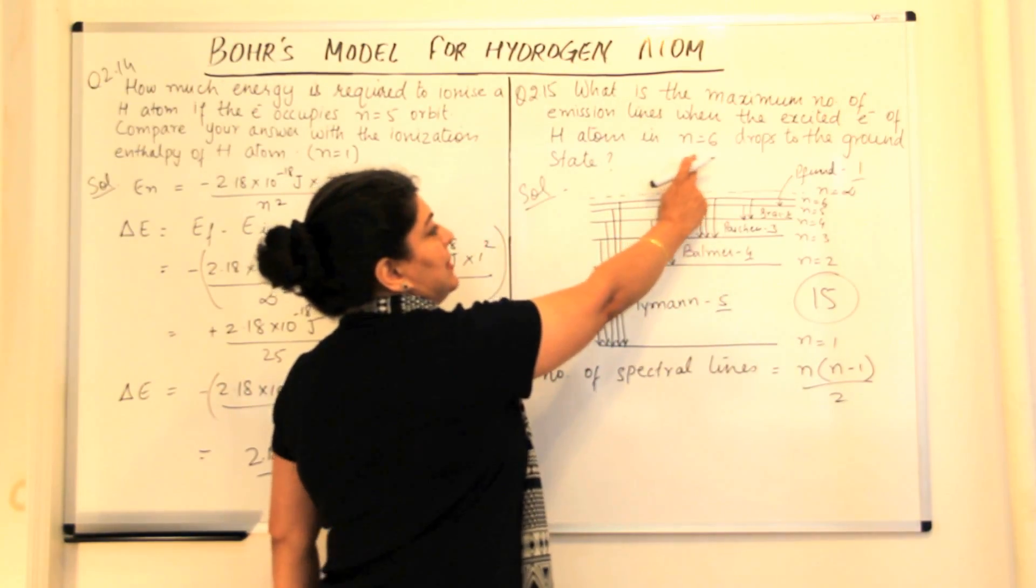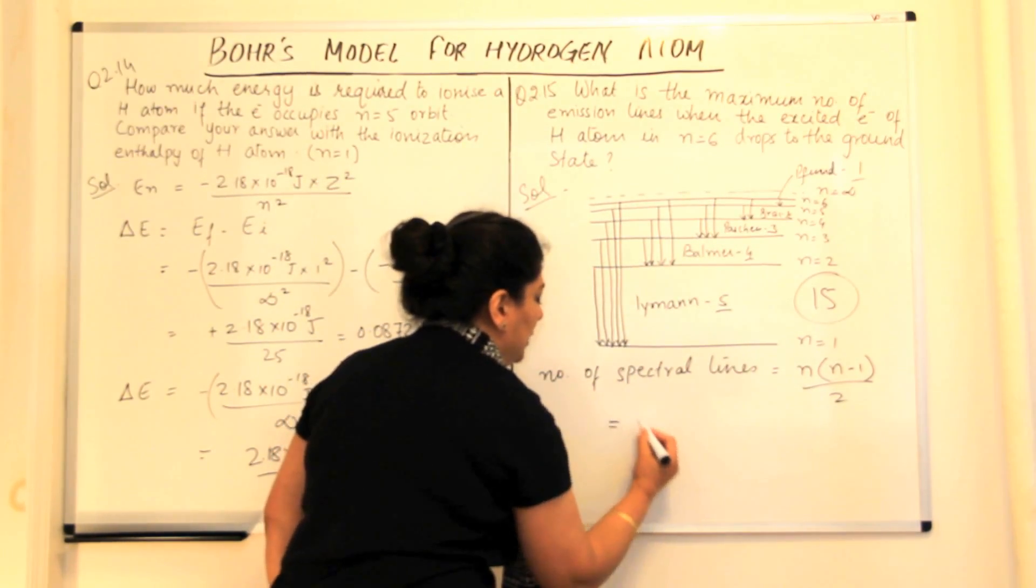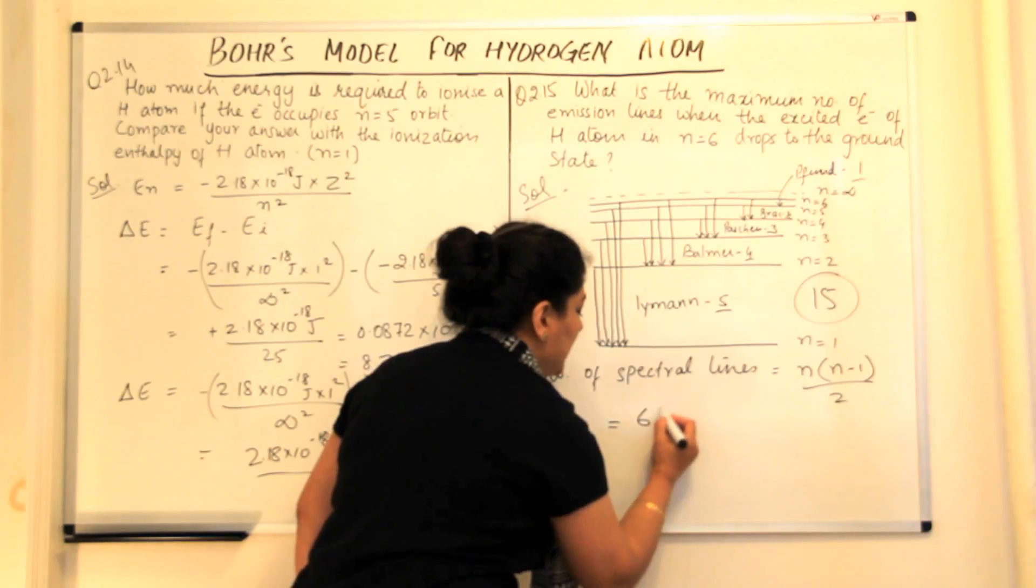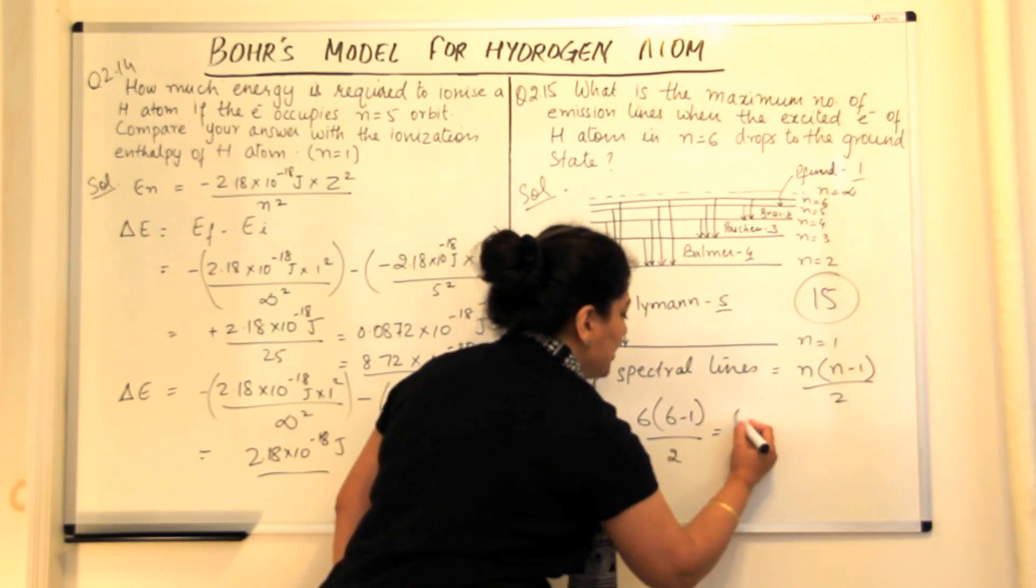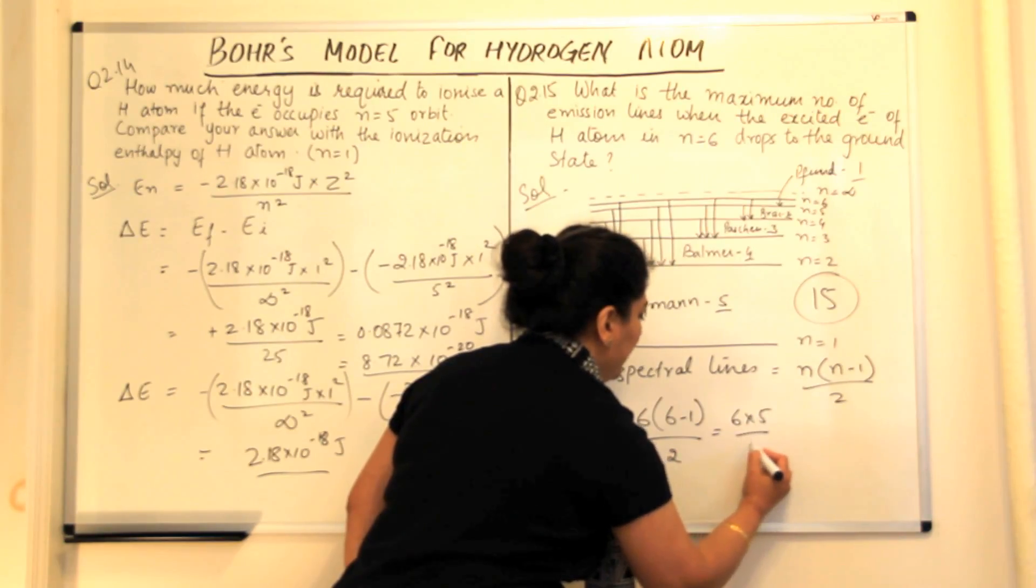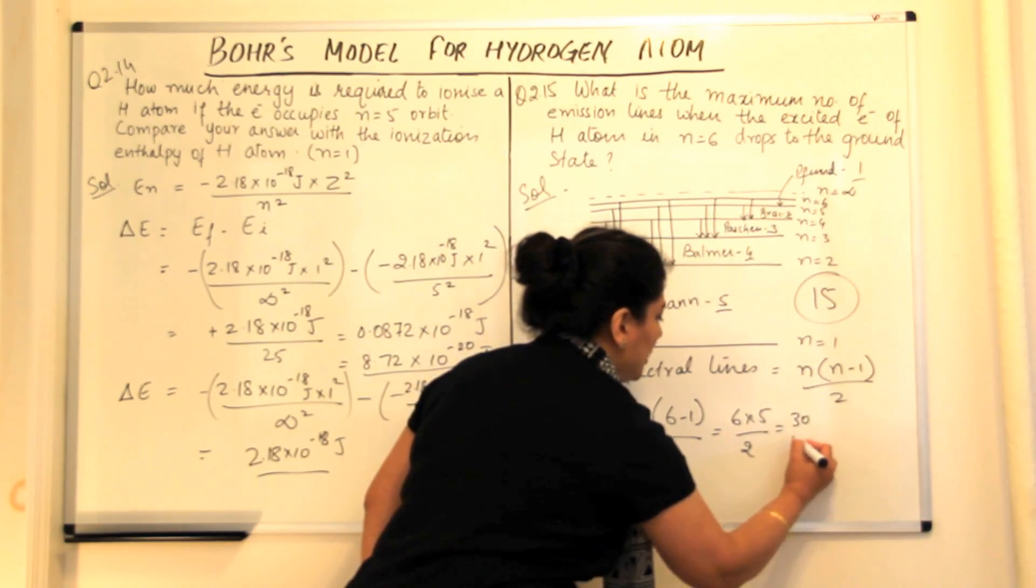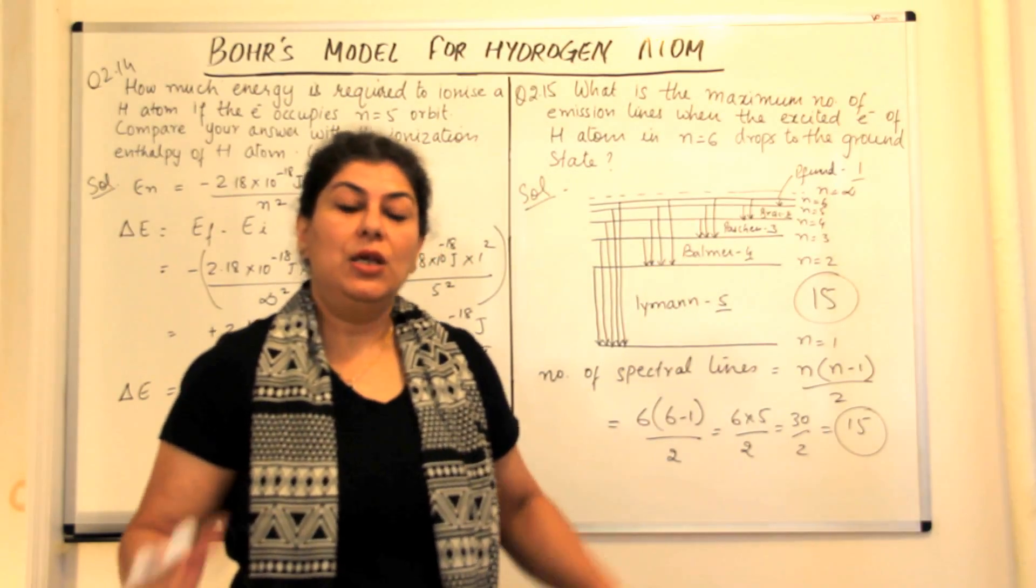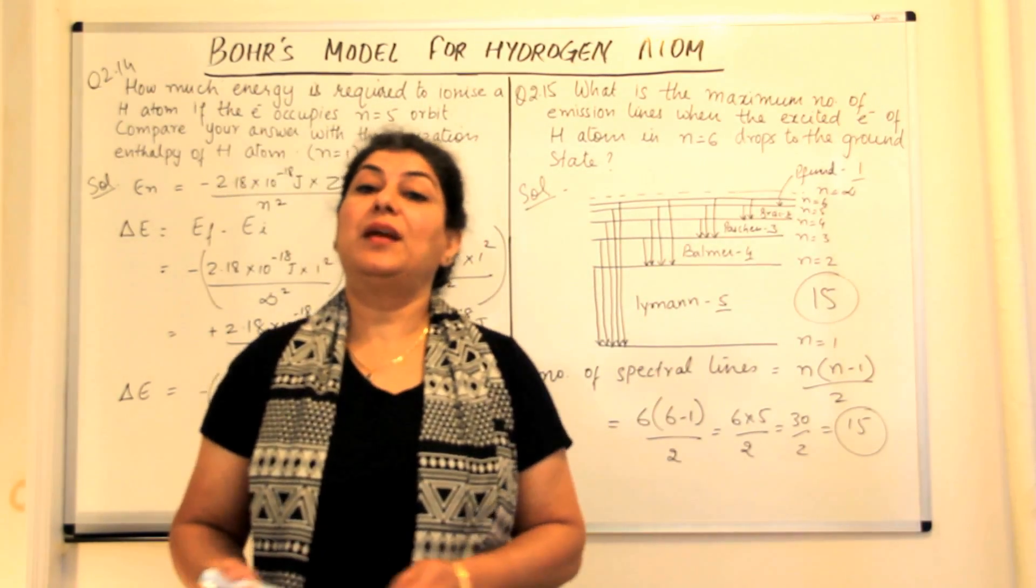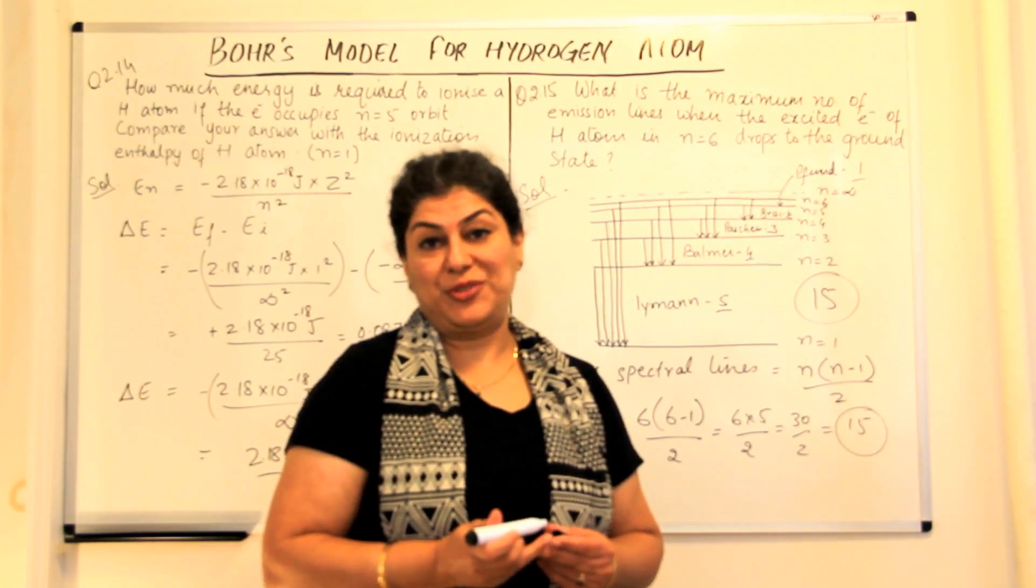N is given to us as six. So the number of spectral lines would be six into six minus one upon two, which is six into five upon two, which is thirty by two, which is fifteen. That's how you calculate the number of spectral lines which are produced.